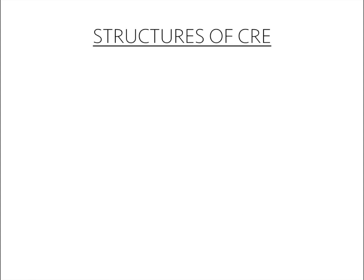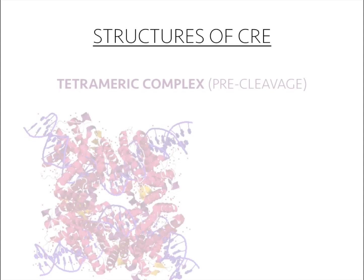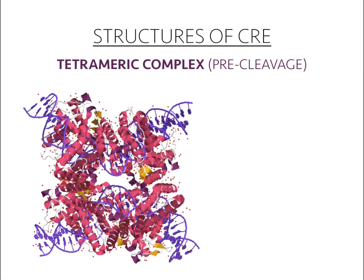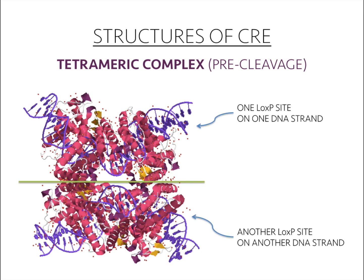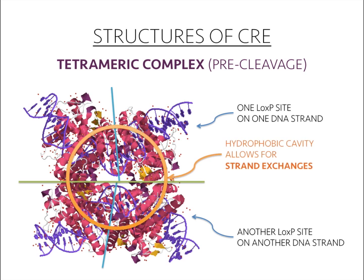When two DNA strands are involved in recombination, Cre is in a tetrameric complex in which the dimers on each strand interact. The green line separates the two dimers, and each dimer wraps around the LoxP site on each DNA strand. In a tetrameric complex there are four subunits, with the blue and green lines separating each subunit. The four subunits create a hydrophobic cavity in the middle where the strand exchanges occur.